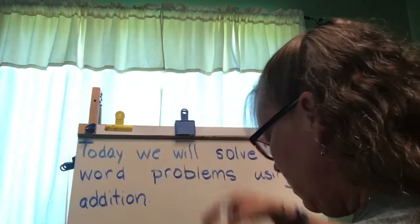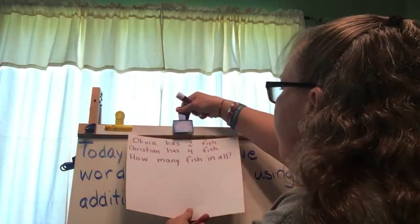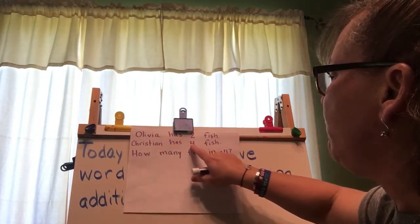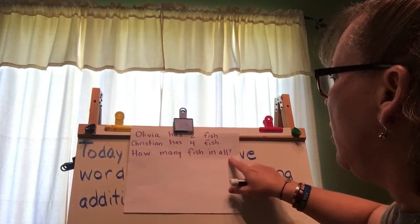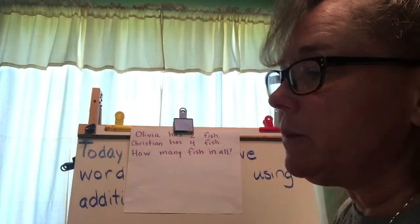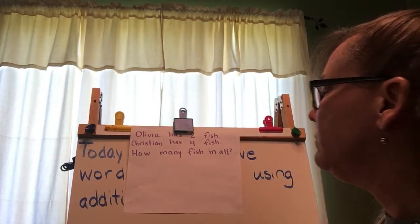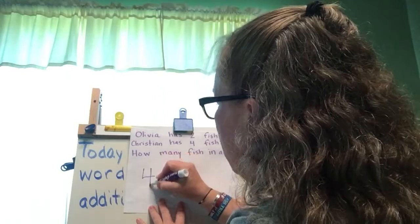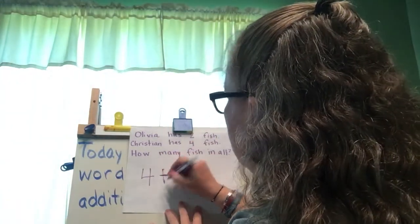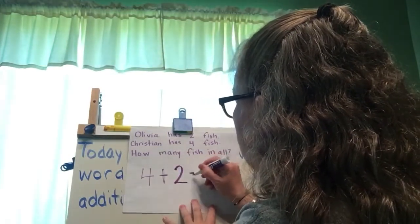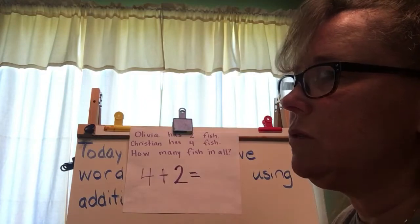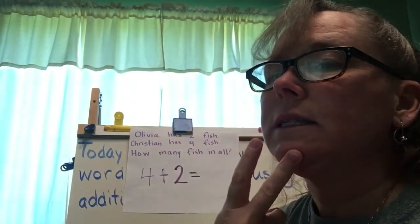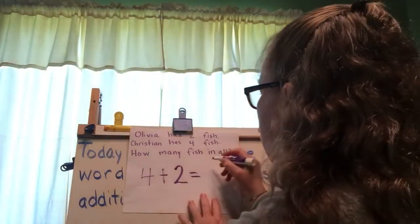Let's do one more. Olivia has two fish. Christian has four fish. How many fish in all? Well, 'in all' tells me it's an addition problem. So I'm going to take the two numbers in my word problem — four — and add two to it, and that's going to equal... let me count: one, two, three, four, five, six. This one equals six.